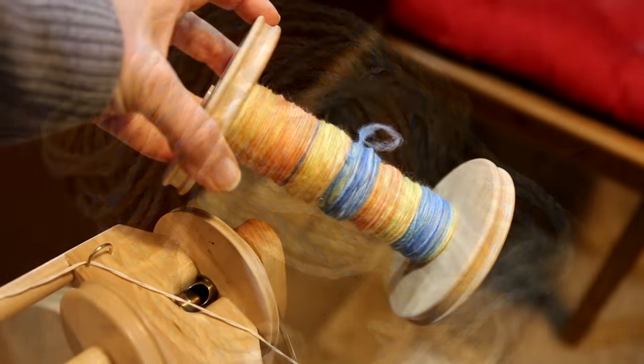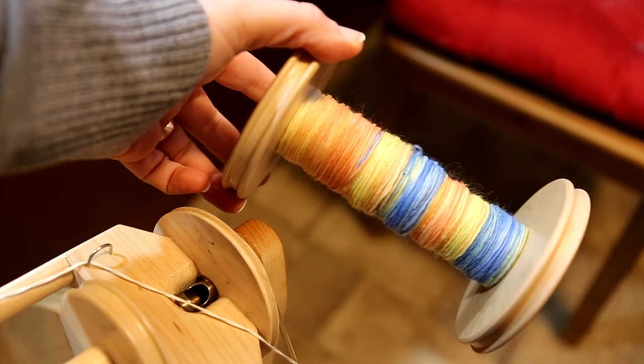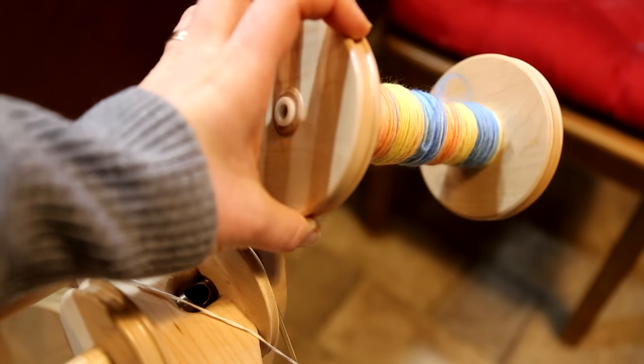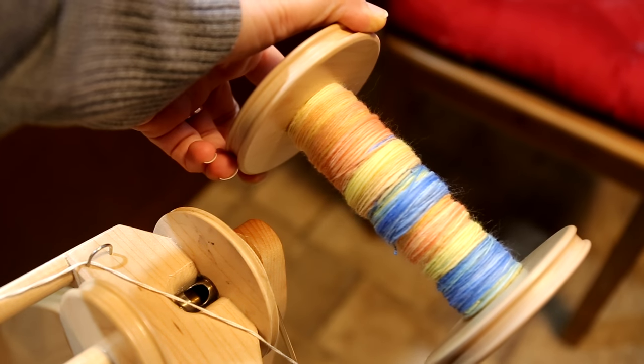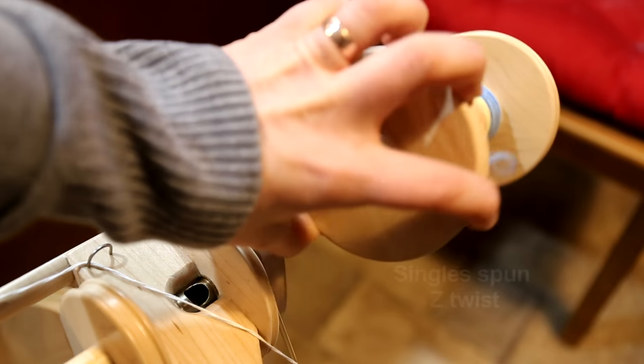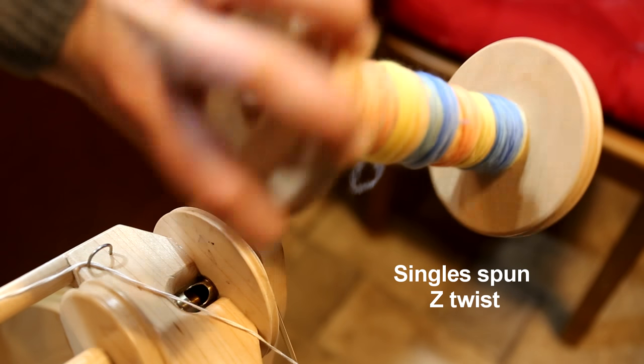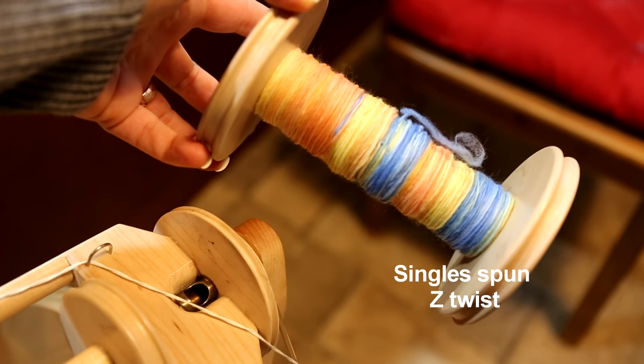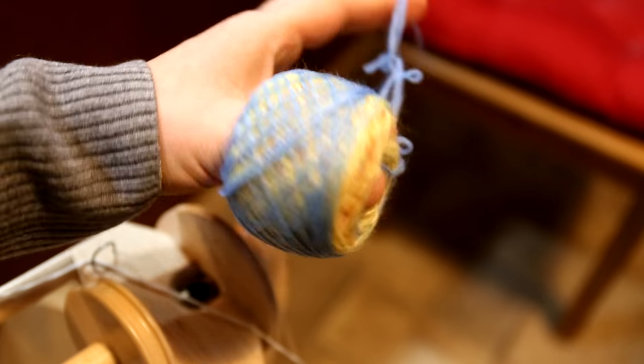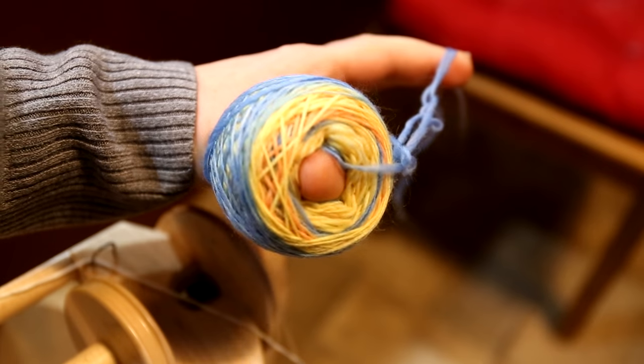First I like to have a bobbin of singles, and my bobbin of singles is always spun with a whole bunch of Z twist in it. So that means I have spun - sorry, Z twist - so that means my singles have been spun with my wheel going to my right.